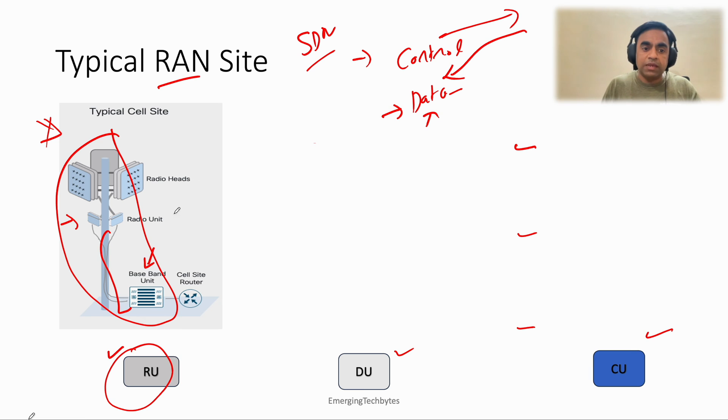Now, earlier it was like only just one site which was connected, but now you have split it but you still need to connect this, right? So this connection that you are giving between RU and DU is what is called as front haul.